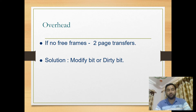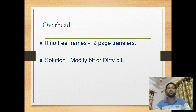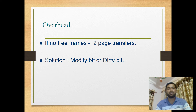There is overhead in page replacement: if no free frame is already available, two page transfers are required — first, the victim page from physical memory to secondary storage, and then the desired page from secondary storage to physical memory. This double transfer is the overhead. The solution is to use a modify bit or dirty bit, which we will discuss later.